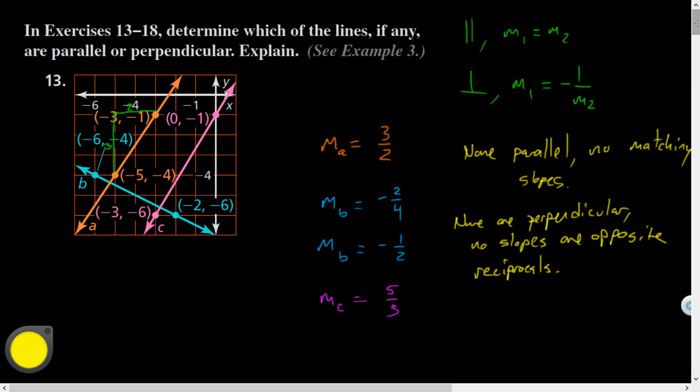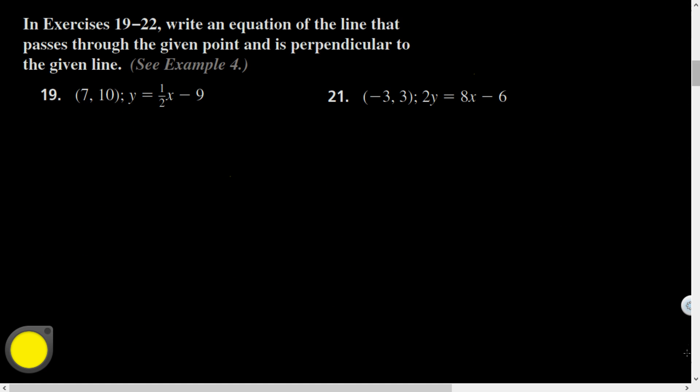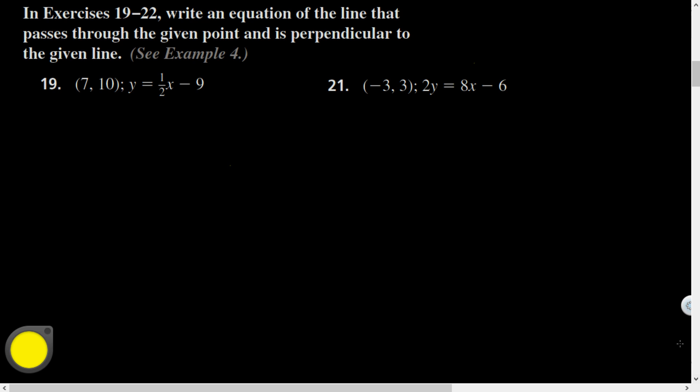All right. So there's that question. Let's get into the awesome ones. These are my favorite. Here we go. Given a point and a line, find one that is perpendicular to it. So let's see.